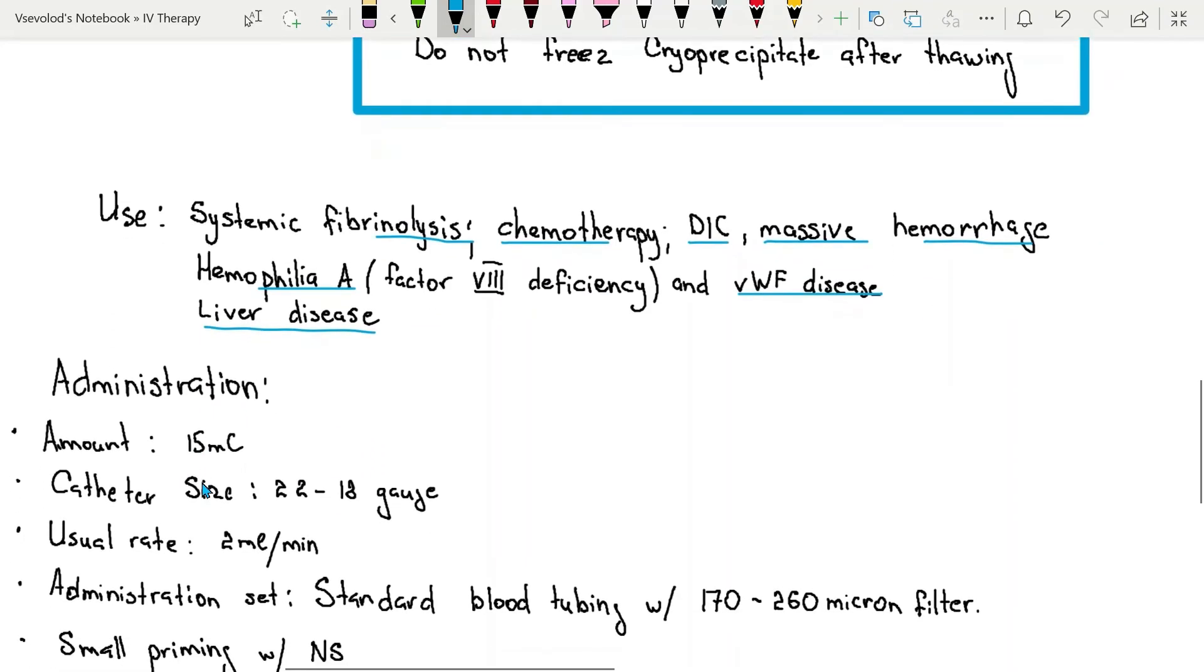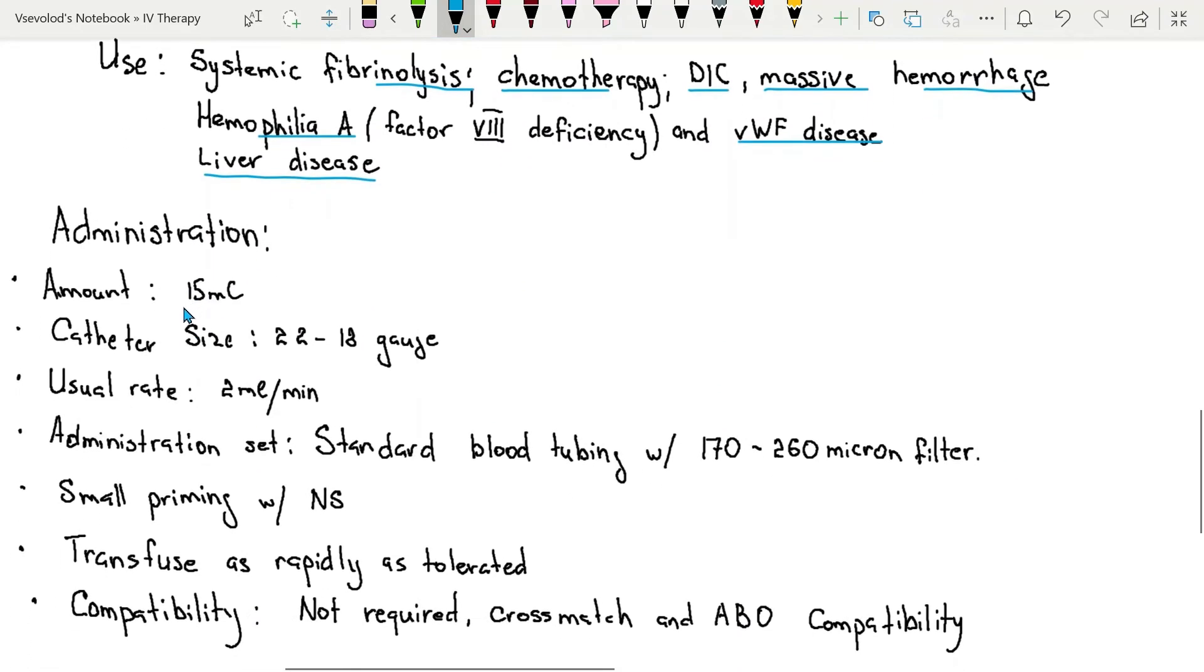In administration, the amount usually given is 15 milliliters. Catheter size is 22 to 18 gauge. Usual rate is 2 milliliters per minute for adults.